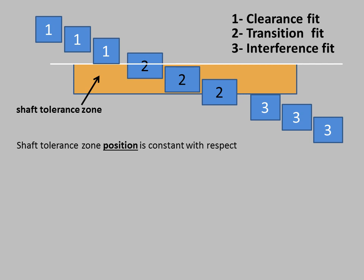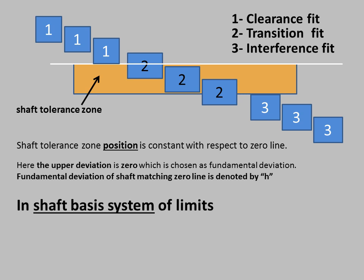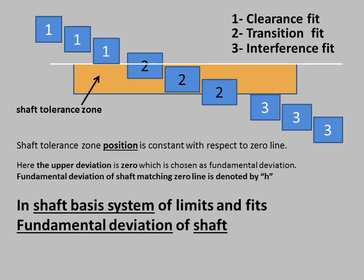In the shaft basis system, the shaft tolerance zone position is constant with respect to the zero line. Here, the upper deviation is zero, which is chosen as the fundamental deviation. The fundamental deviation of the shaft matching the zero line is denoted by h. In the shaft basis system of limits and fits, the fundamental deviation of shaft will always be h.